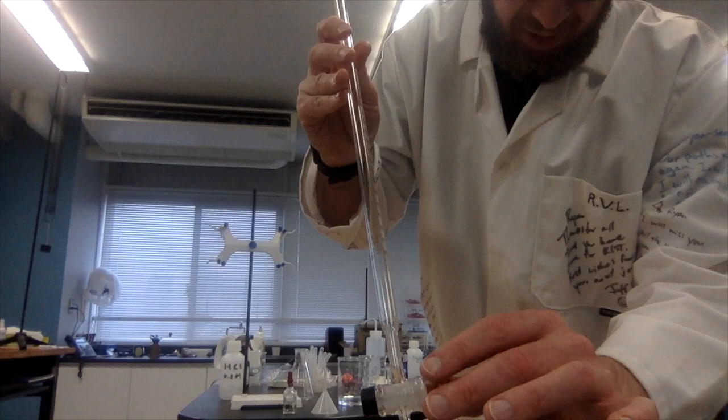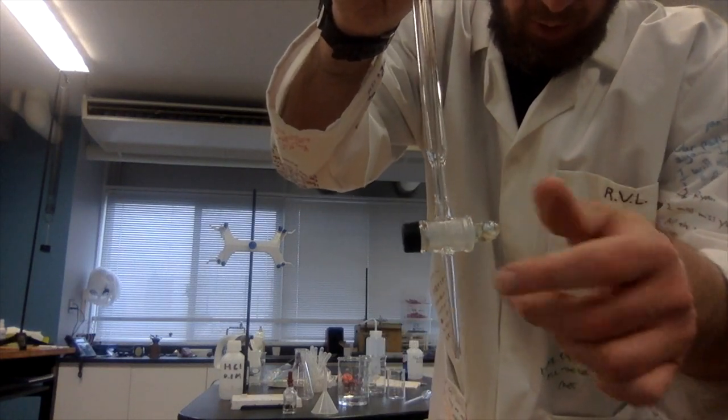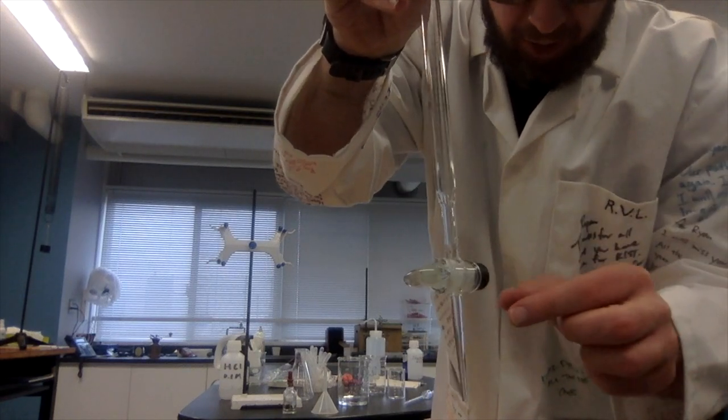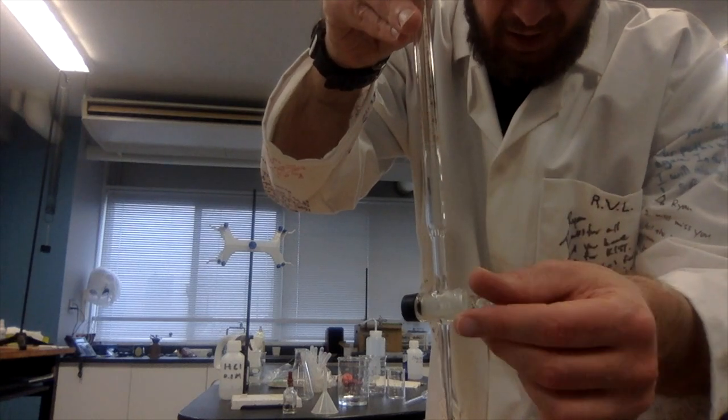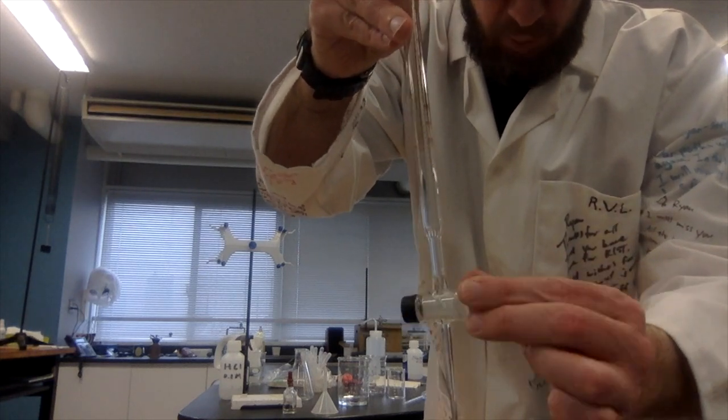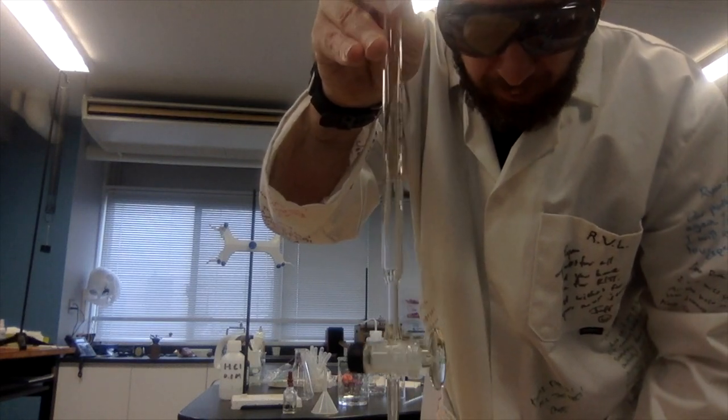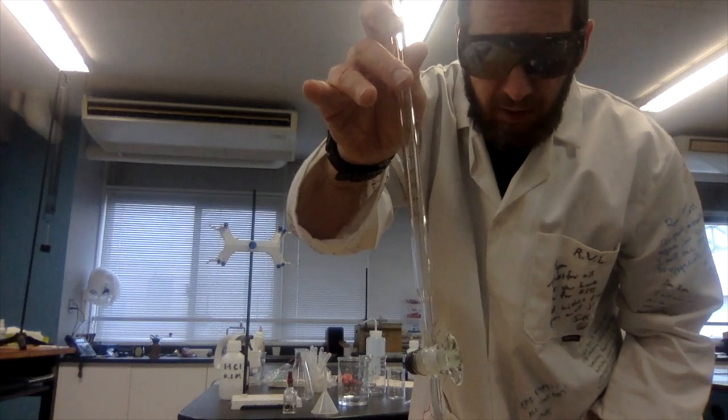This is called a stopcock and this is how we open and close the burette. So perpendicular, when the stopcock is perpendicular to the tube that is closed, and when it is parallel to the tube that is open. In other words, a liquid will drain out when the stopcock is open.